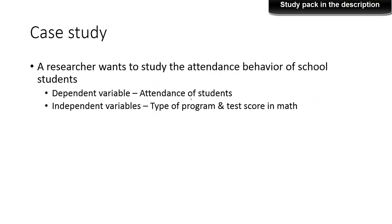To understand this, let us take a case study and solve it using R. A researcher wants to study the attendance behavior of school students. The dependent variable is attendance — specifically, the number of days students were absent from class. The independent variables are the type of program a student is enrolled in and their score in maths. So there are two independent variables and one dependent variable.